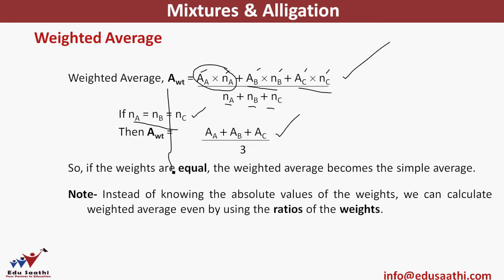Instead of knowing the absolute values of the weights — N_A, N_B, N_C — we can still calculate the weighted average using the ratio of the weights. If instead of actual values of N_A, N_B, N_C we are given their ratios, we can still solve the question. An easier way is to always use the ratio, as it simplifies the calculation.